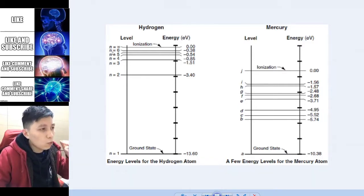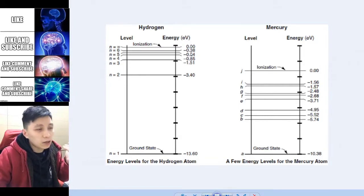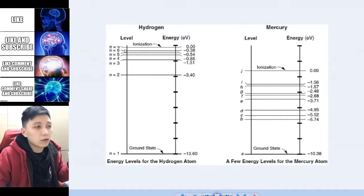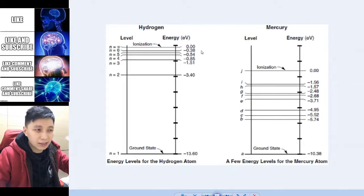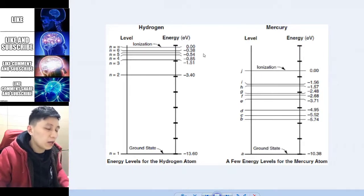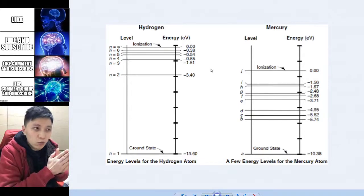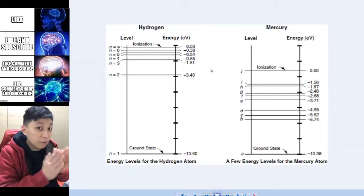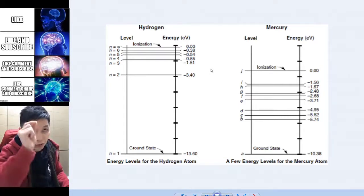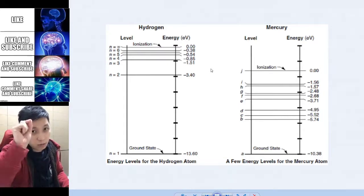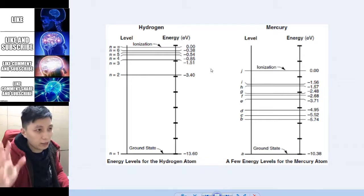At the fifth excited level, n=6, the energy is -0.38 eV, and of course there are many more energy levels above that, which you can imagine get less and less. In this case, the wavelengths being emitted would have a smaller difference in energy, and that's why you see many more color bands on the right-hand side.